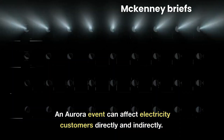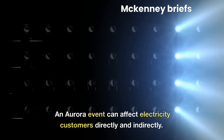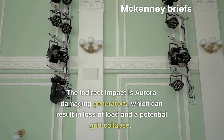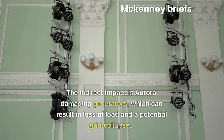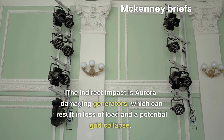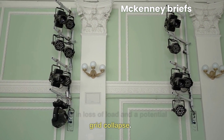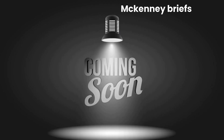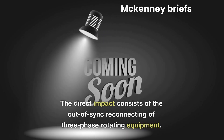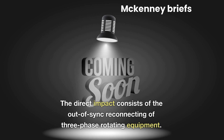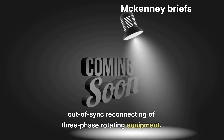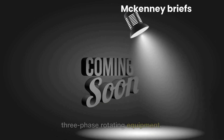An Aurora event can affect electricity customers directly and indirectly. The indirect impact is Aurora damaging generators, which can result in loss of load and a potential grid collapse. The direct impact consists of the out-of-sync reconnecting of three-phase rotating equipment.